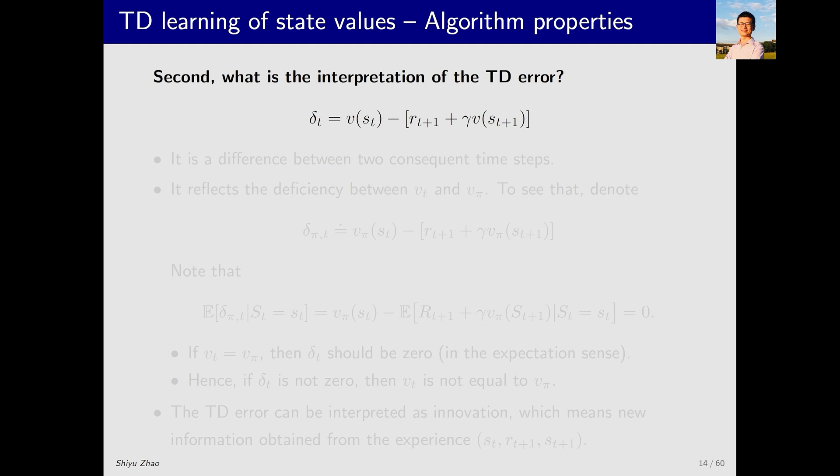Next, let's discuss the concept of TD error. How should we interpret the TD error? I have already written it here, delta is V minus this term. First, we need to understand that it is an error between two quantities, V(s_t) and the right-hand term. These two quantities are actually at two different time steps. This is at time t and this is at time t+1. It involves two time steps. This is why it is called temporal difference. This is a straightforward interpretation.